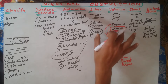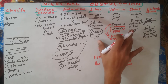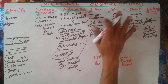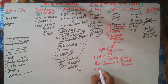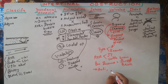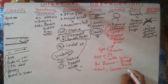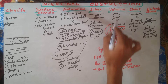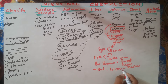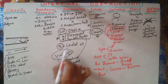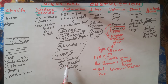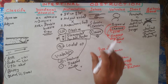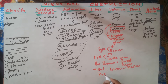For treatment of volvulus, after resuscitation and stabilization, give antibiotics and perform laparotomy with repair — laparoscopic repair — of the sigmoid part. We will untwist the part. If the gut has undergone strangulation or gangrene, we resect that part and then anastomose. If viable, we simply untwist; if strangulated, we resect and anastomose.